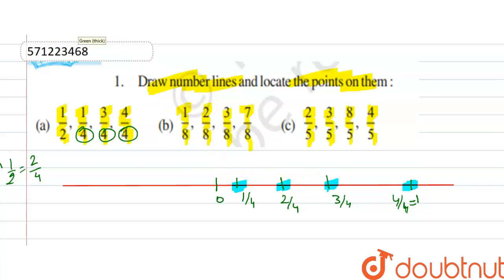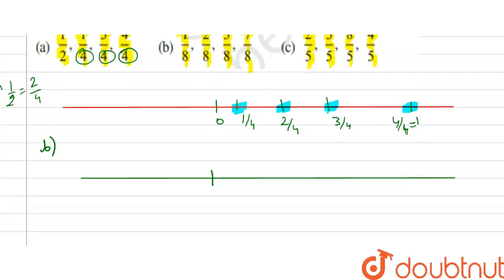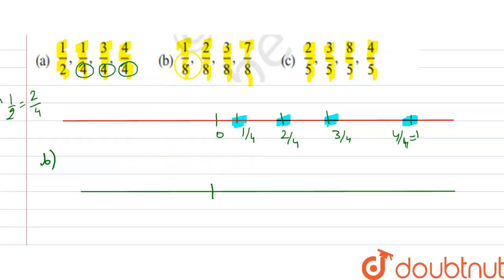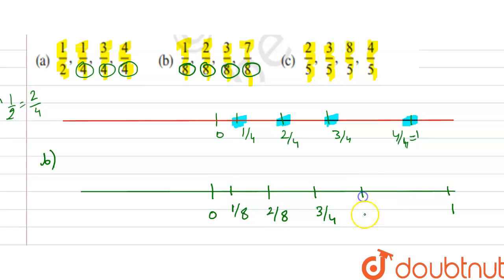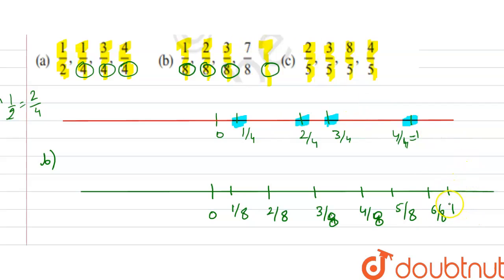Now draw the second number line. The points are 1/8, 2/8, 3/8 and 7/8. Since the denominator is 8, we take an interval of 1/8 between 0 and 1, giving us 8 intervals. So the points marked are: 1/8, 2/8, 3/8, 4/8, 5/8, 6/8, 7/8, and 8/8. Our required points are 1/8, 2/8, 3/8, and 7/8, which are now located on the number line.